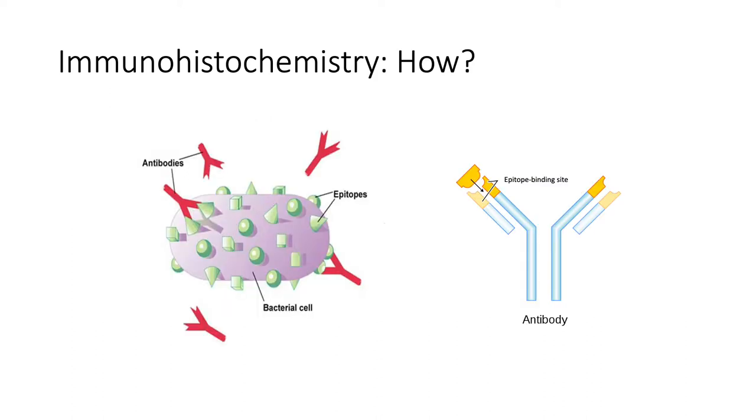So how does immunohistochemistry work? First, the tissue of interest is isolated and treated with antibodies. A primary antibody will recognize a specific region of the target protein known as the epitope, allowing for the antibody to bind the protein.